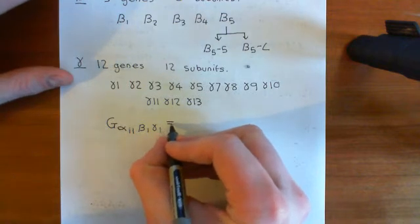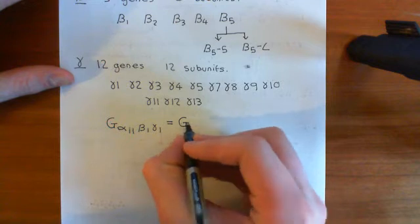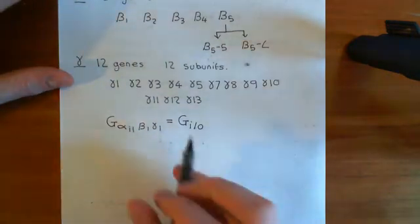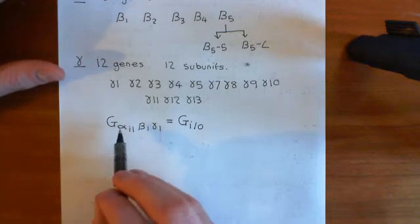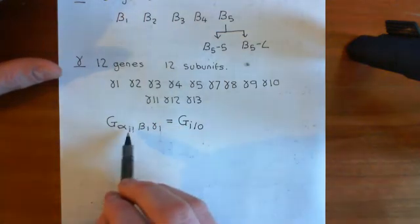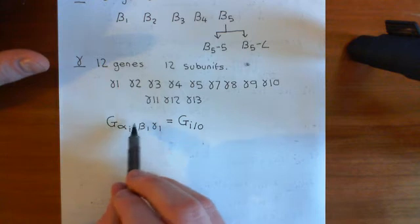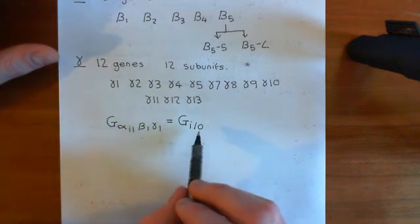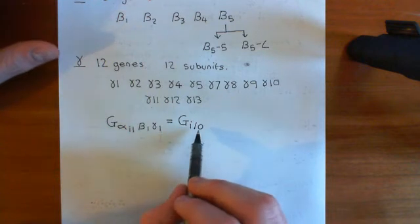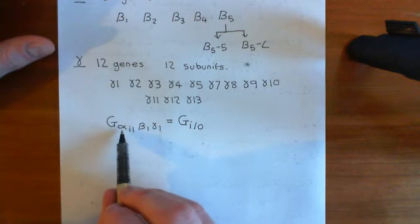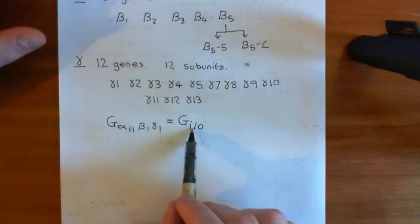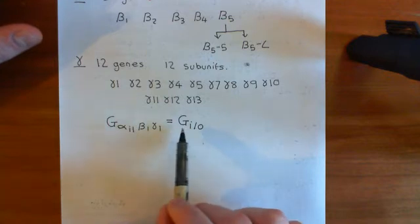Instead, people will usually say this is a heterotrimeric G protein and call it GI/0. Heterotrimeric G proteins are usually just named according to which alpha subunit they have. If they were being rigorous, they'd tell you it was a GI1 heterotrimeric G protein, because that would tell you the alpha subunit was alpha I1. But often people don't even tell you which alpha subunit specifically it is. Instead, they tell you which of the four families it is in — is it in the GS family, the GI/0 family, the GQ/11 family, or the G12/13 family?